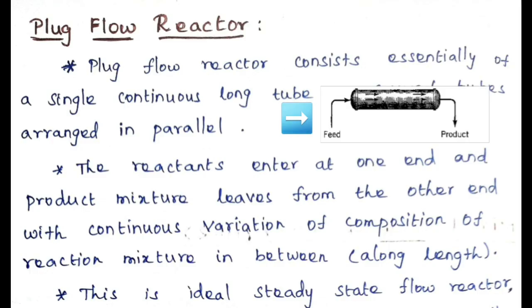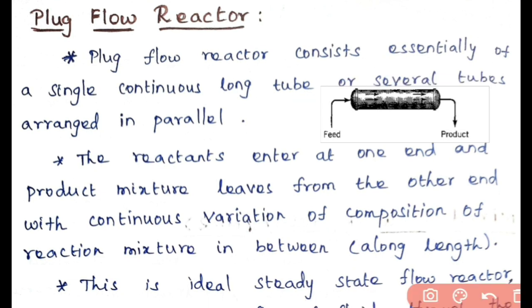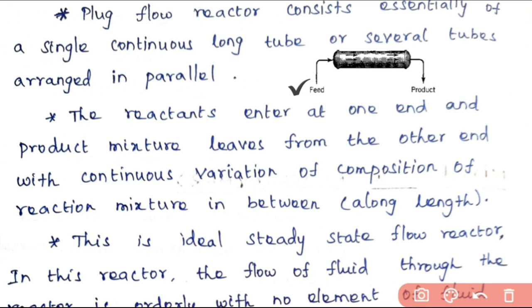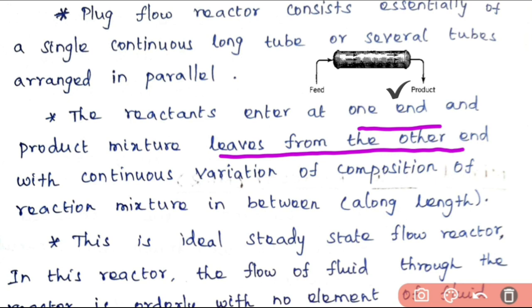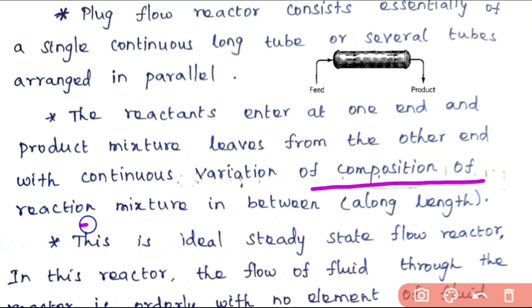This is your diagrammatic representation of an ideal plug flow reactor. This plug flow reactor consists essentially of a single continuous long tube or several tubes arranged in parallel. The reactants enter at one end and the product mixture leaves from the other end, with continuous variation of the composition of the reaction mixture along the length of the tube.